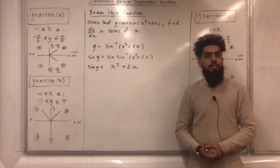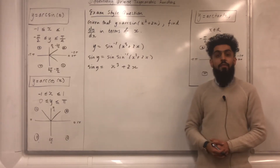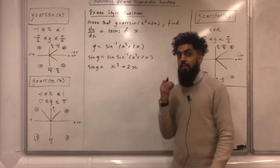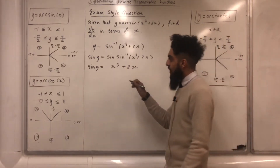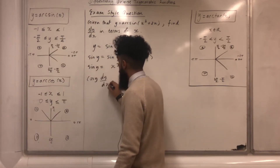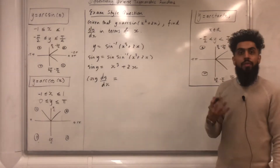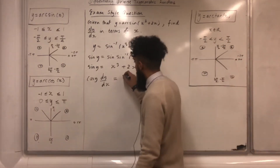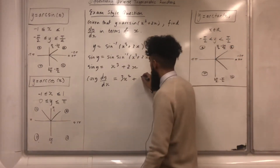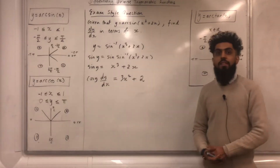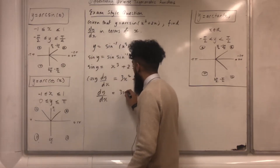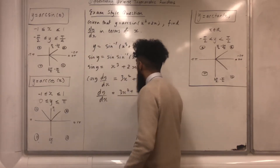This is an implicit equation, so we use implicit differentiation. Differentiating sin y with respect to x gives cos y times dy/dx. Differentiating x cubed gives 3x squared, and differentiating 2x gives 2. So cos y dy/dx equals 3x squared plus 2. Making dy/dx the subject gives dy/dx equals 3x squared plus 2 all over cos y.